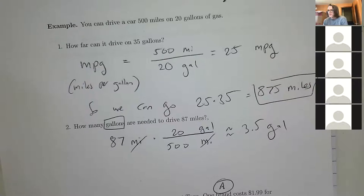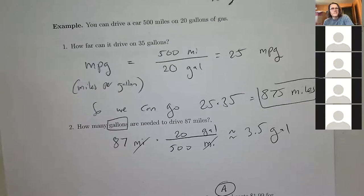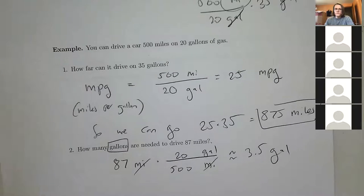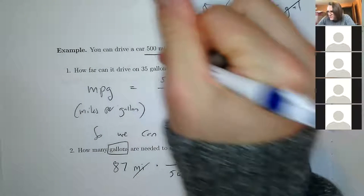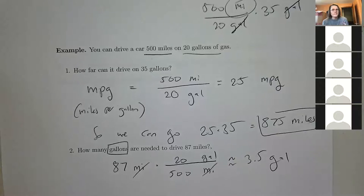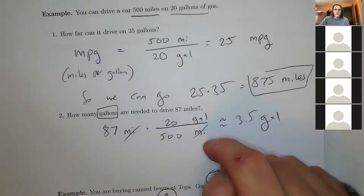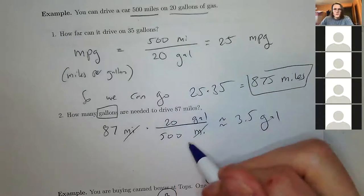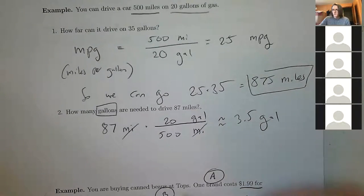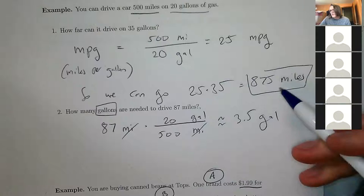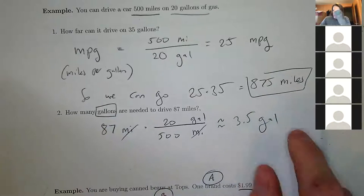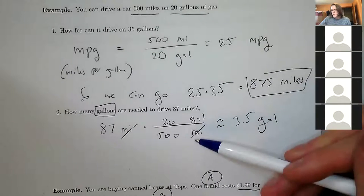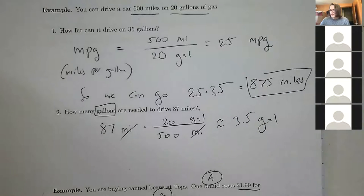Basically, when using conversion factors, you're equating 500 miles = 20 gallons and treating that ratio as multiplying by 1. You can flip it whichever way you want. The units guide you — if you want to convert 87 miles to gallons, you multiply by the appropriate factor so gallons pop out and miles cancel. It's kind of like magic, actually.